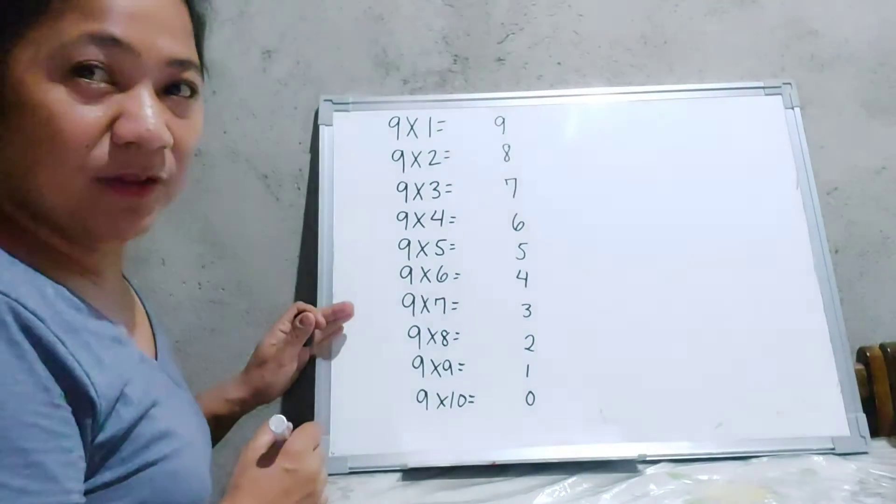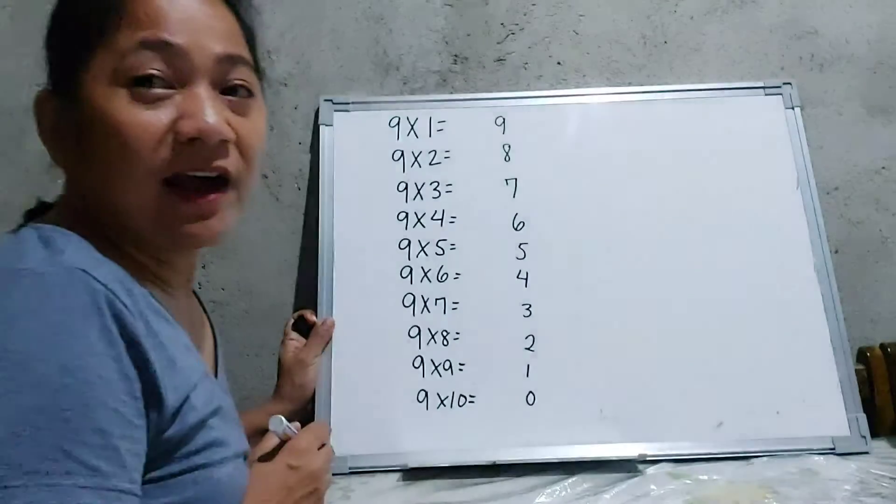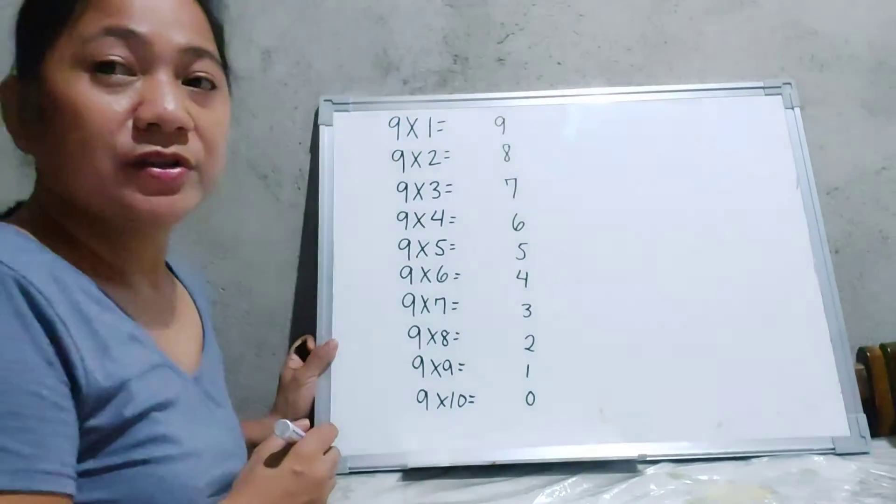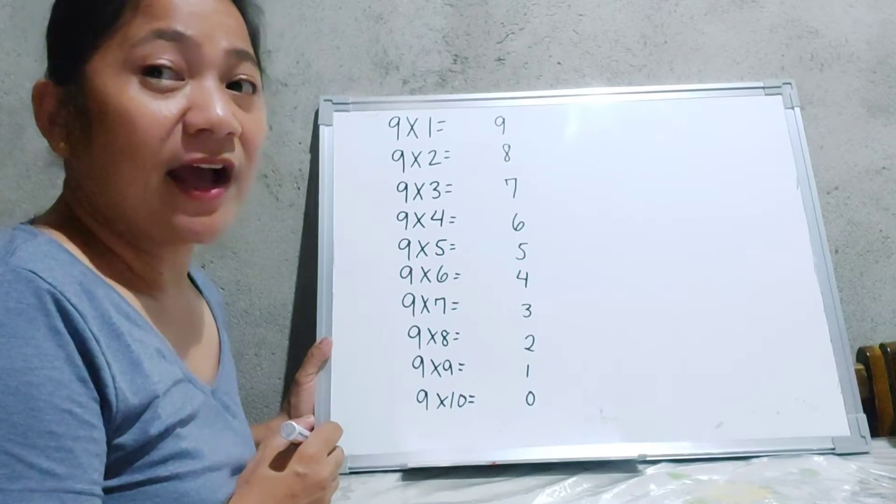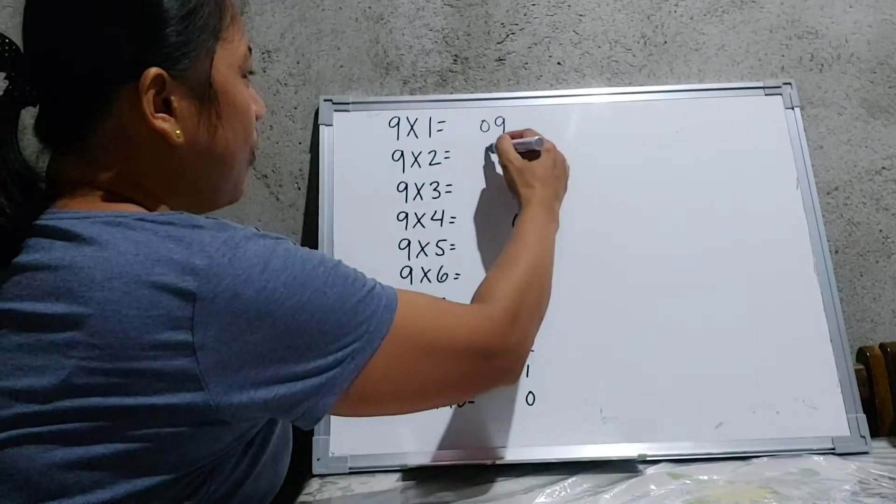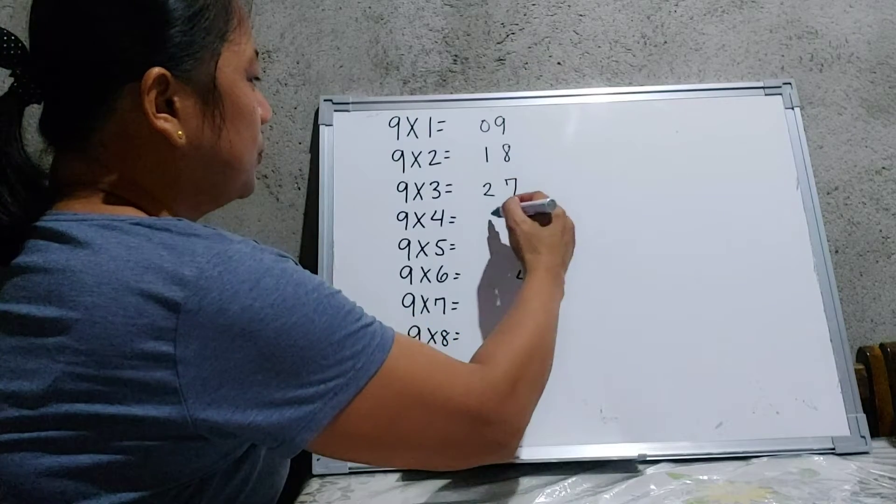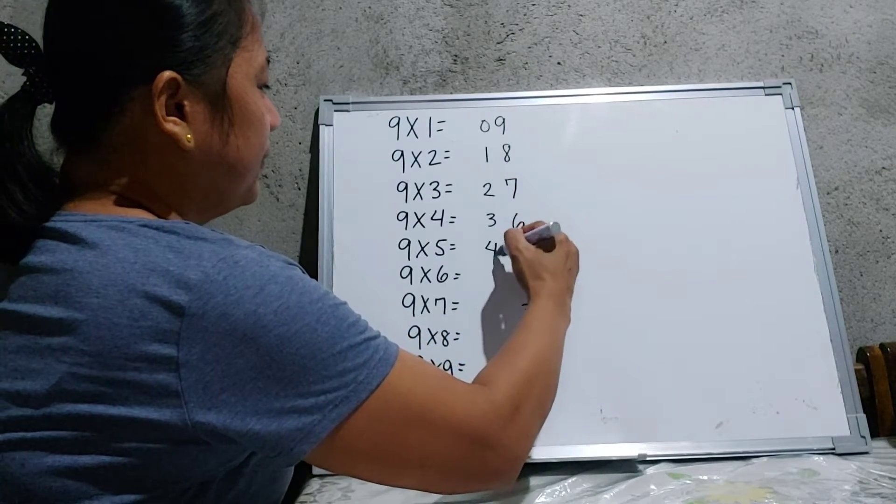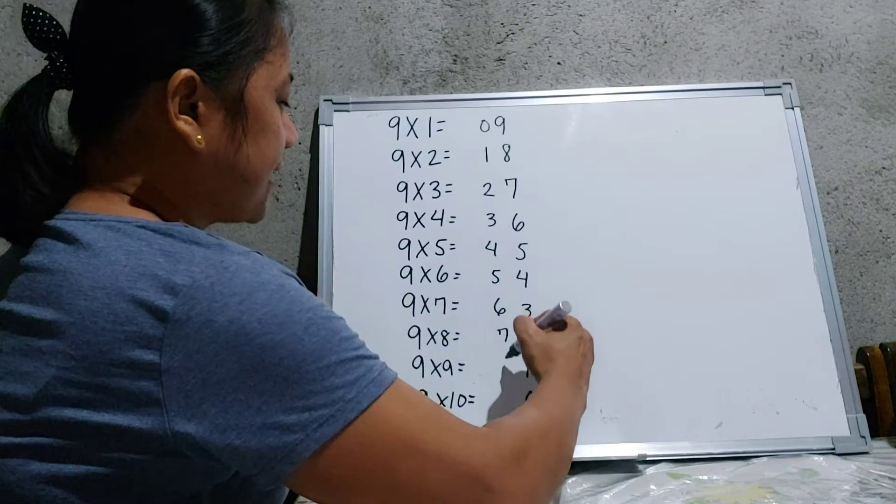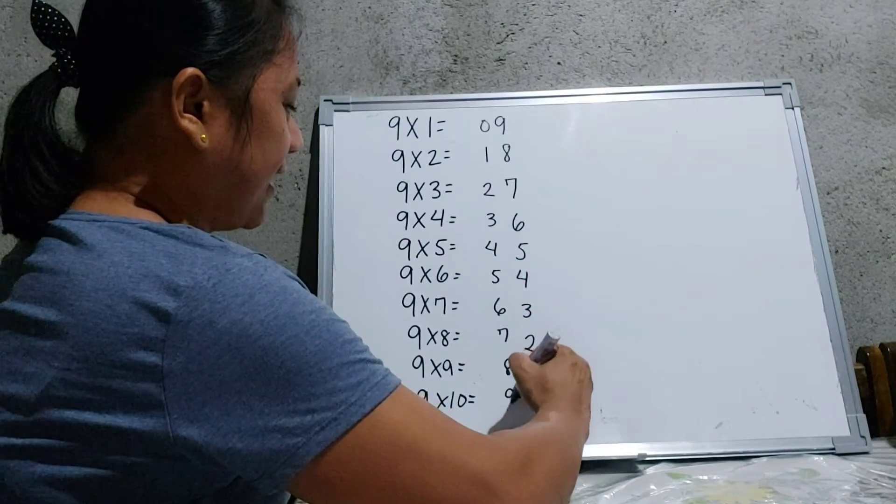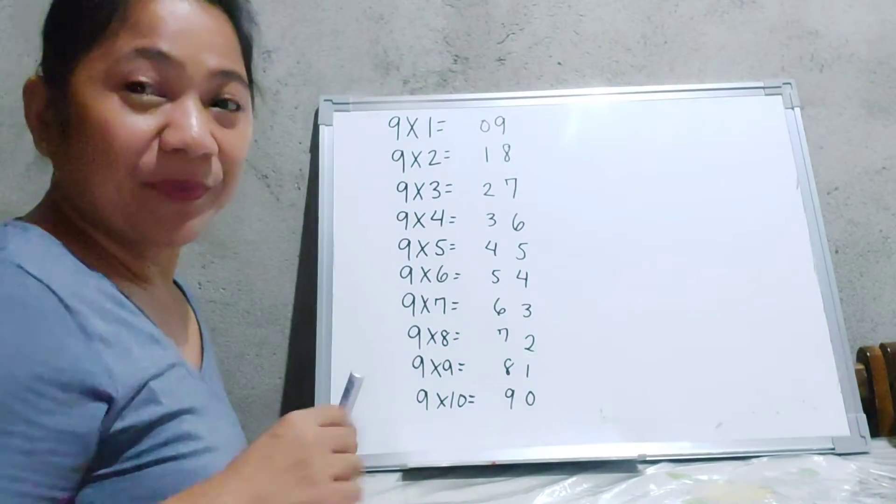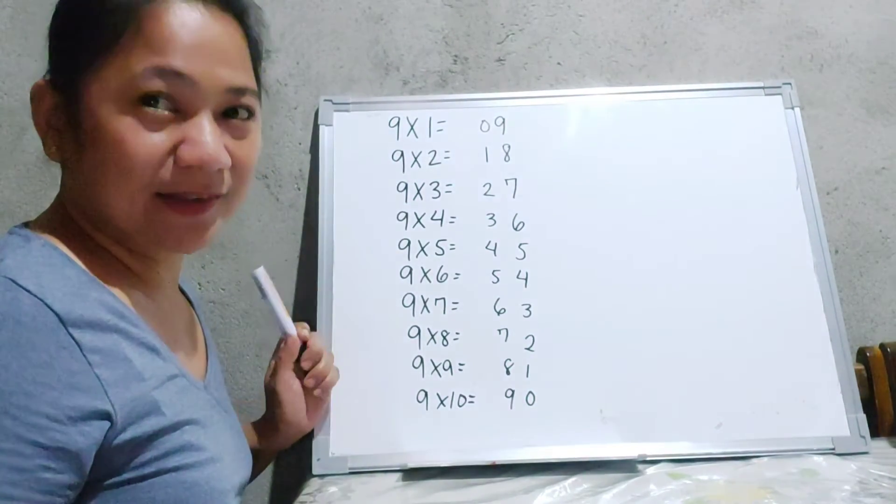And to make it complete, let us write down the numbers 0 to 9 into the ascending form. So we have 0, 1, 2, 3, 4, 5, 6, 7, 8, and 9. So did you get the first trick of this table?